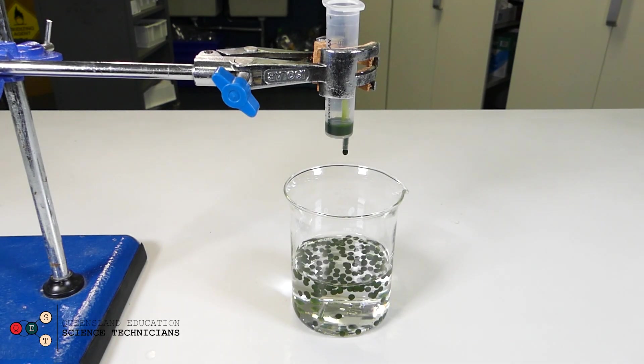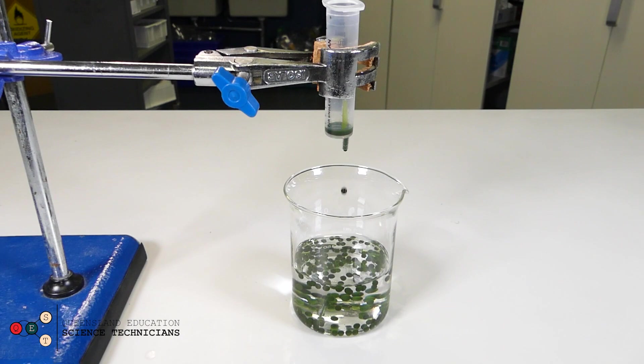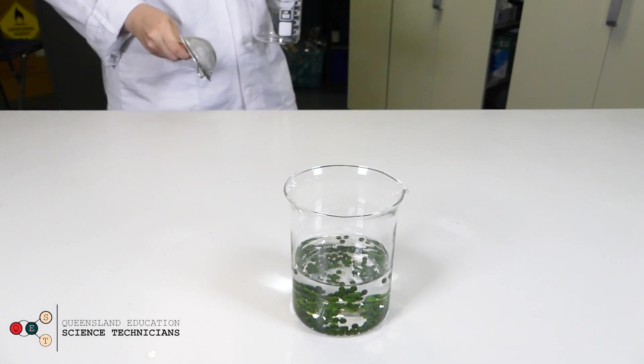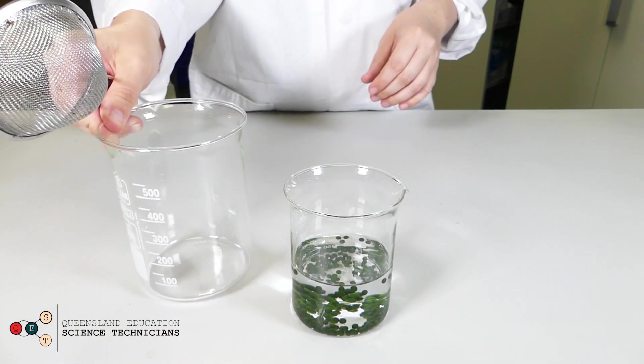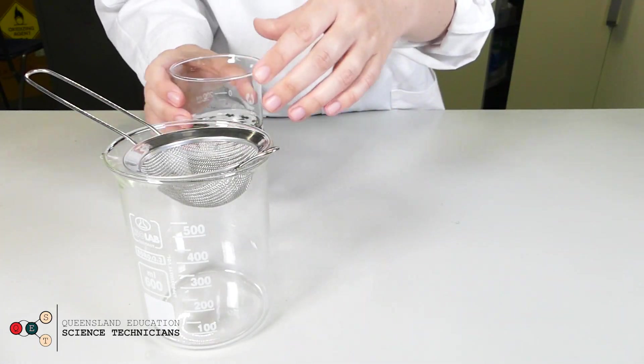That's speeding it up a little bit there. Now you just need to leave them in the calcium chloride solution for about 5 to 10 minutes so that the balls are really solid before pouring your solution out into a sieve.